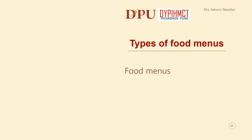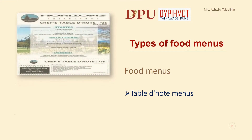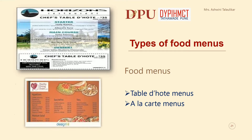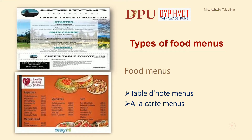We shall now understand the different types of food menus. The first type of food menu is table d'hôte menu. These are fixed price menus with very few choices within the courses. À la carte menus are individually priced and there are a lot of choices in each course.